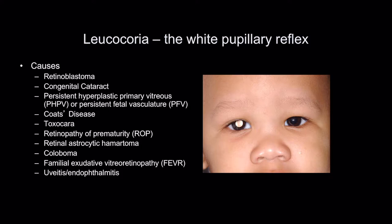Leukocoria is the white pupil reflex, as seen in this child here, often picked up on digital photographs that the family take, so it's always very useful to ask that history of when it first started and so on.